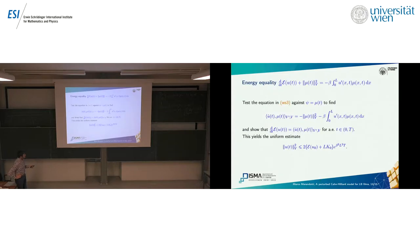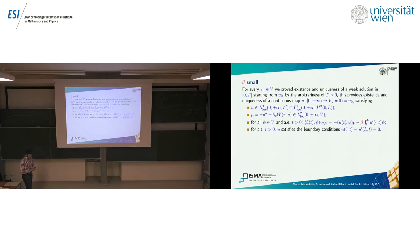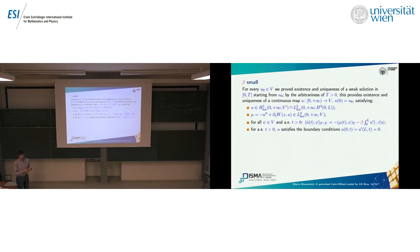For the case beta small: given an initial datum, we proved existence and uniqueness of a weak solution. Since the time T was arbitrary, we get existence and uniqueness on [0, +∞). The initial datum is attained, the regularity properties on the solution and chemical potential are obtained, and we have the weak formulation here — now making explicit the dependence on beta.